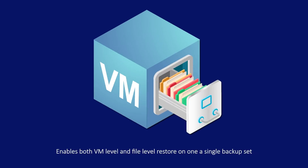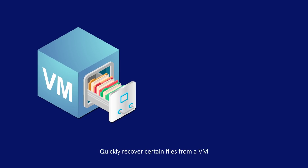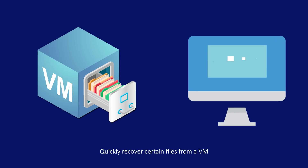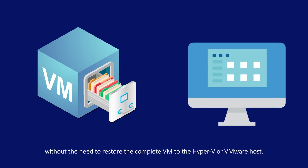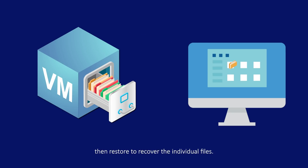Granular restore enables both VM and file-level restore on one single backup set. Quickly recover certain files from a VM without the need to restore the complete VM. Simply mount the virtual disk directly from the backup destination to recover the individual files.